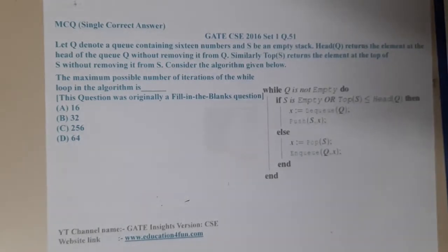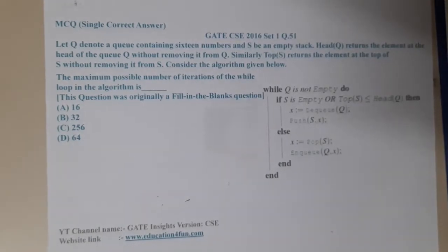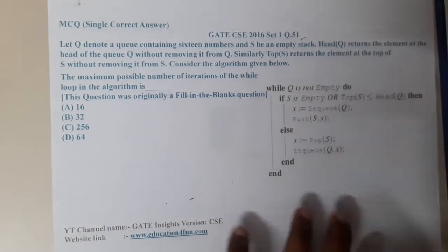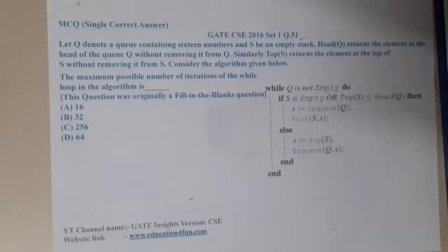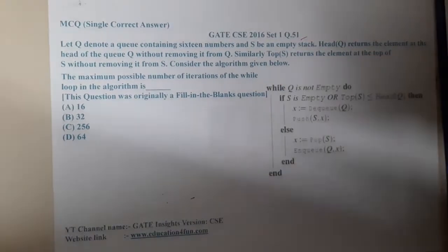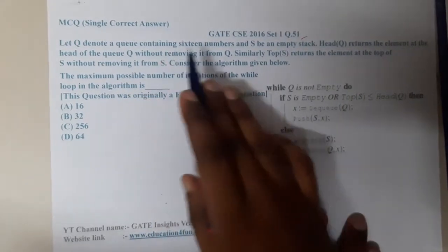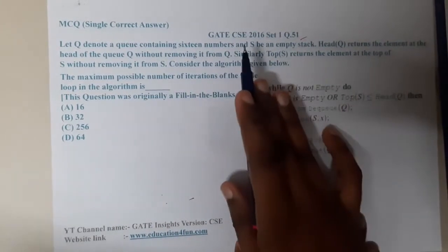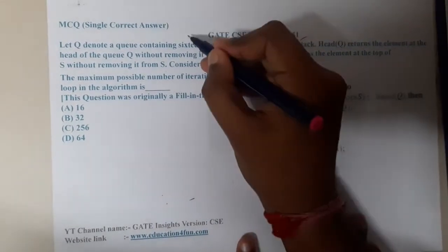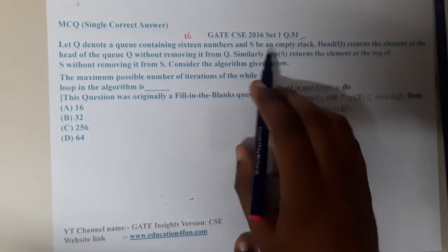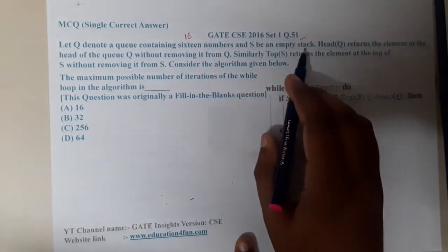Hello guys, welcome back to the next lecture. This question belongs to GATE CSC 2016 Set 1, Question 51. Let Q denote a queue containing 16 numbers and S be an empty stack.